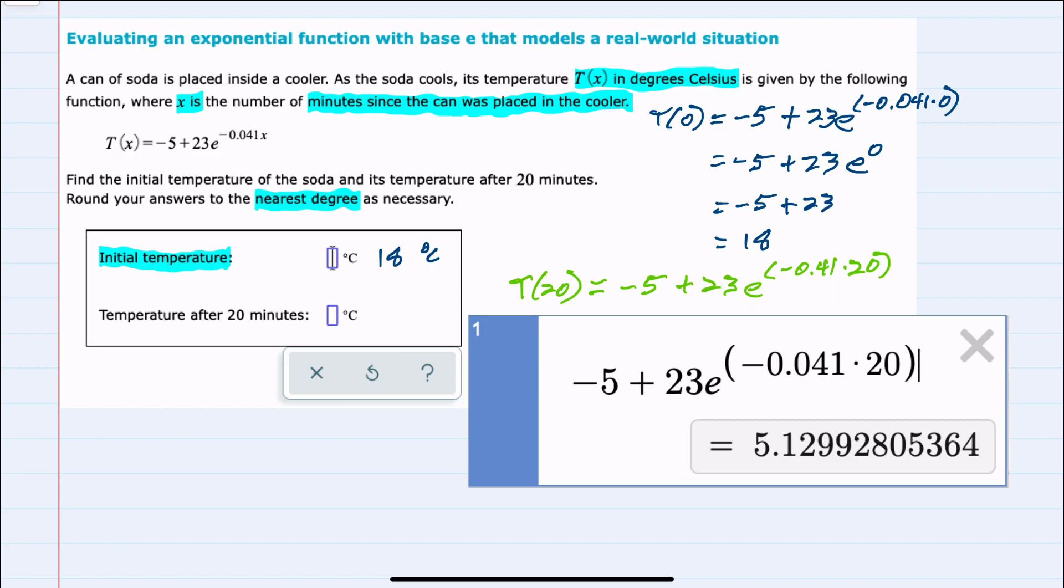To do this calculation, I used Desmos and typed in negative 5 plus 23. You can either use the multiplication sign or just put the e next to the 23, and Desmos will understand that as multiplication. Then the caret symbol to get an exponent, and I used an open parenthesis to make sure that both of those values being multiplied are in the exponent: negative 0.041 times 20, and closing the parenthesis.